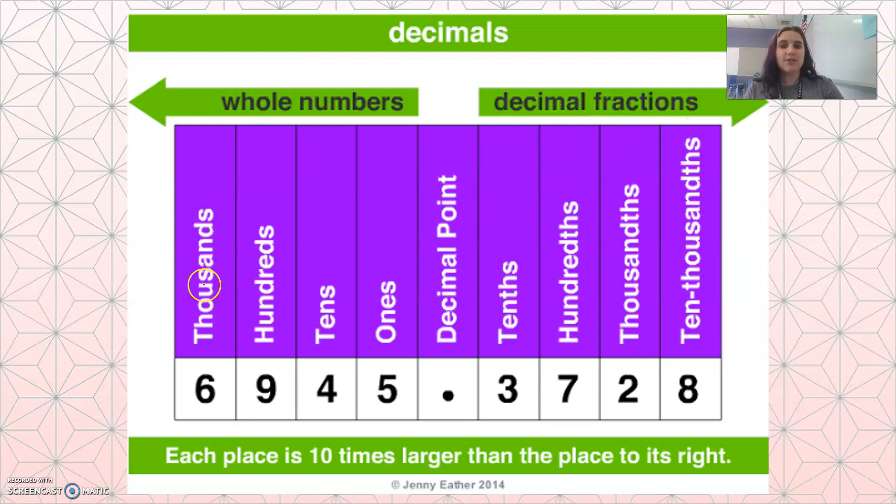So the whole numbers are the thousands, hundreds, tens, and ones. The decimal numbers are read as tenths, hundredths, thousandths, ten thousandths. So there's that PHS at the end.